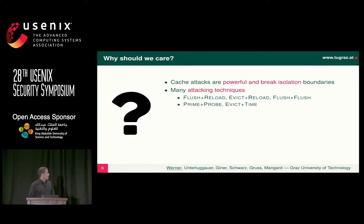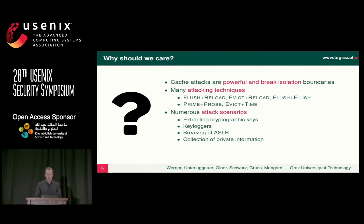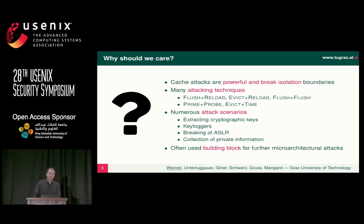So why should we care about this? The problem is that you can do a lot with the knowledge of hits and misses in the cache. The attacks are quite powerful — they break isolation boundaries, and even if you write correct software, you cannot be sure your data doesn't leak to any concurrent process. There are a lot of different attacking techniques; some require shared memory, others like Flush+Reload don't. We've seen numerous attack scenarios: key loggers, cryptographic key extraction, ASLR breaks. Cache attacks are also an important building block for other micro-architectural attacks like Meltdown and Spectre.